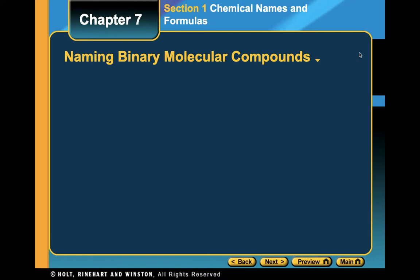Today we are starting the day six video and we're going to be talking about how to name binary molecular compounds. Unlike previous videos, up until now we have only been talking about ionic compounds — regular cations and anions, the stock system with roman numerals, and polyatomic ions combining with other ions to form ionic compounds. Today we're going to talk about molecular compounds.